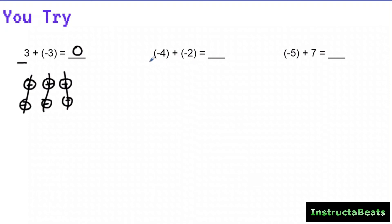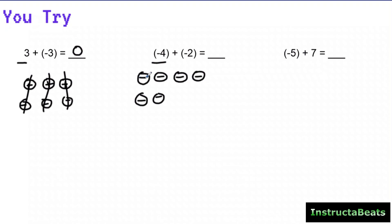Here I'm starting with negative four, so I draw four negative charges, and I'm adding two more negative charges to that. I count: one, two, three, four, five, six — I had six left over because I could not cancel anything out or make any zero pairs. So negative four plus negative two is negative six.